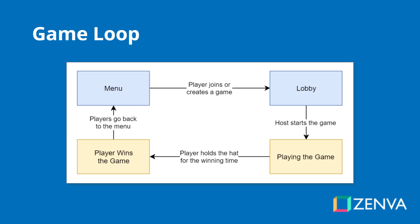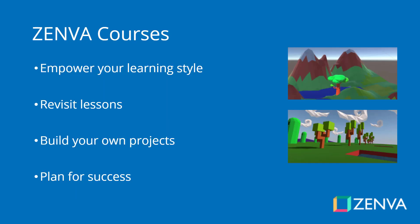This is what our game loop is going to look like. We're going to start on the menu, and then a player can either join or create a game, and that will place them inside the lobby. Once in the lobby, the host can start the game, and that will load up the game scene where they will begin to play the game. When a player who's holding the hat reaches the winning time, that player wins the game, and all the players then go back to the menu.